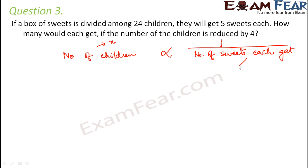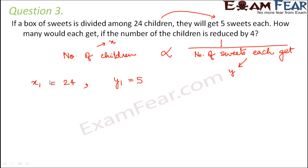Let the number of children be X and number of sweets be Y. So X1 is given as 24 and the corresponding Y1 is equal to 5. In the next scenario, the number of children is reduced by 4, that means 24 minus 4 which is equal to 20. We need to find Y2 — how many sweets each child gets in this case.